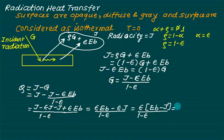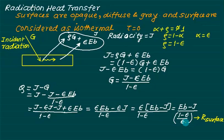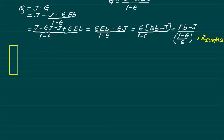In resistance language, we write Q = (Eb − J) / [(1 − ε)/ε]. The denominator (1 − ε)/ε is called the surface resistance. If the body is a black surface, ε = 1 and therefore there is no surface resistance. Surface resistance only exists for gray surfaces.